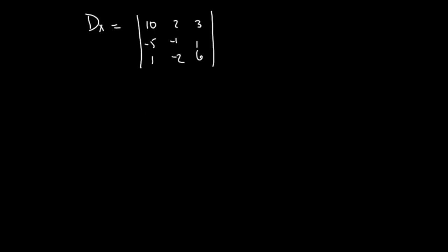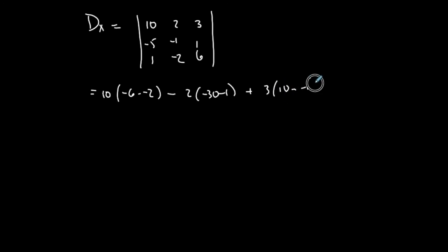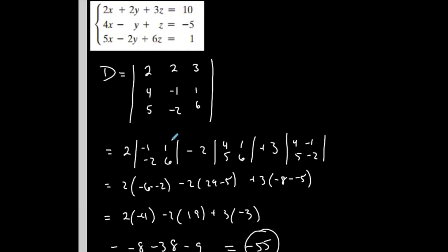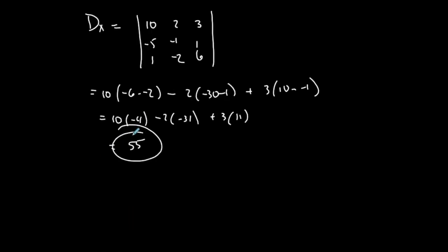So for Dx, I'm replacing the x column with my constant column; the rest of the coefficient matrix stays the same. Going across the top: 10 times negative 6 minus negative 2, minus 2 times negative 30 minus 1, plus 3 times 10 minus negative 1. That gives 10 times negative 4, minus 2 times negative 31, plus 3 times 11 — which is negative 40 plus 62 plus 33 — so Dx equals 55.